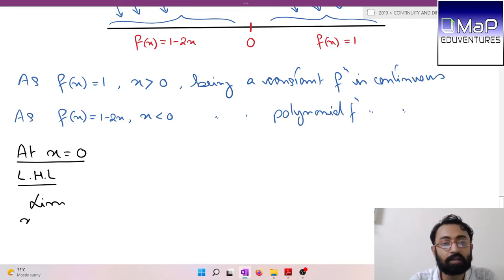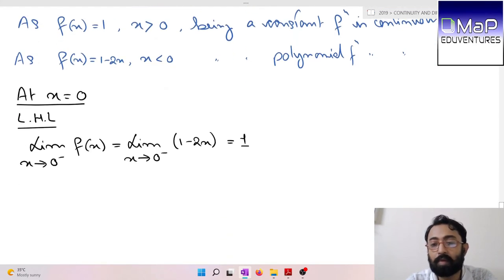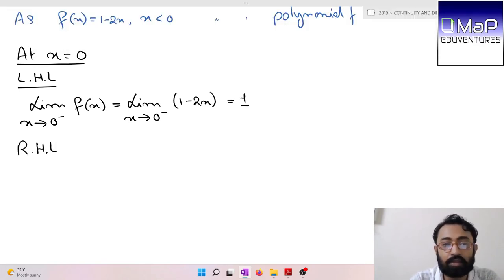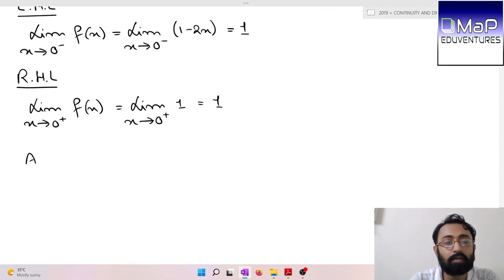Let us check at x = 0. Left hand limit as x tends to 0 minus of f(x) equals limit x tends to 0 minus of 1 - 2x, which gives us 1.